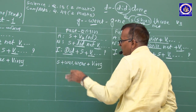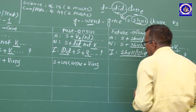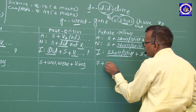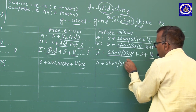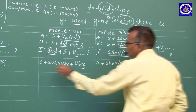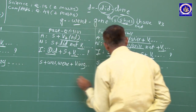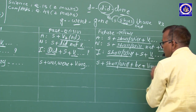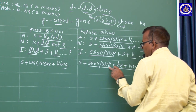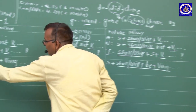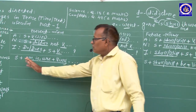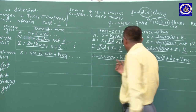Interrogative — Past Continuous: Was/Were + Subject + Verb-ing + ? Extra words (question words) પાછળ લખાય. Present Continuous: am/is/are + Verb-ing. ચાલુ કાર: am/is/are (Present), was/were (Past), shall be/will be (Future) + Verb-ing.